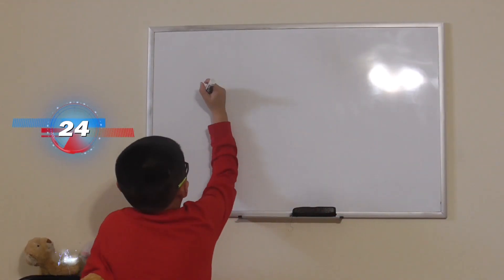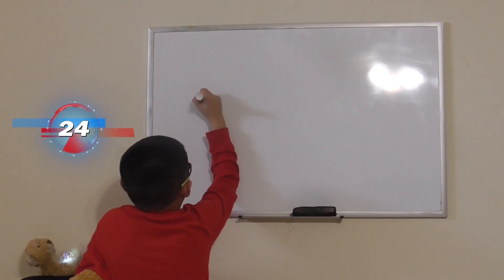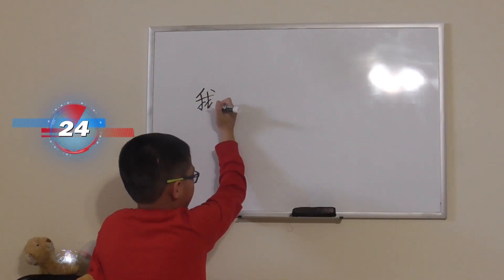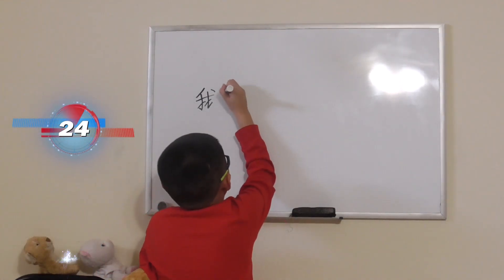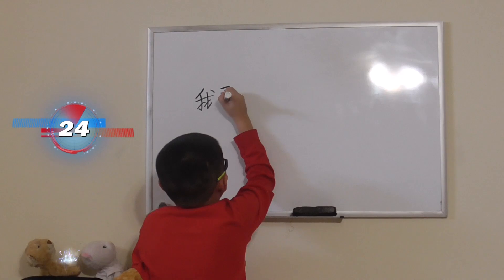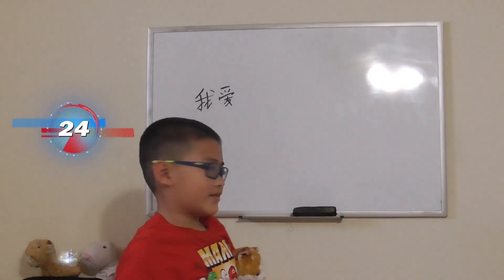What's your first word? 我, I means I or me. 爱, I means like or love.